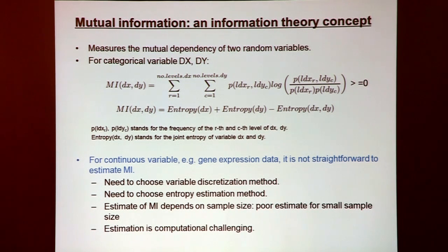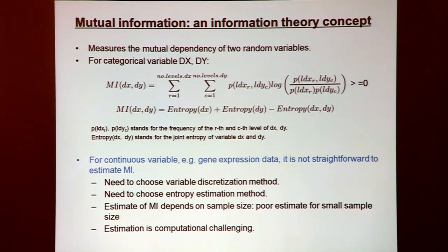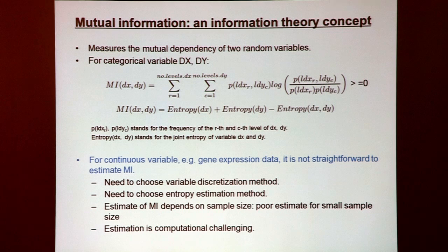Mutual information is an optimal measure for digital and discrete information. Information theory was largely about transmitting digital information, and there are theorems showing mutual information satisfies certain axioms. It's therefore very tempting to assume it's also optimal for co-expression studies. However, there's one glitch: gene expression levels are not digital — they are continuous variables.